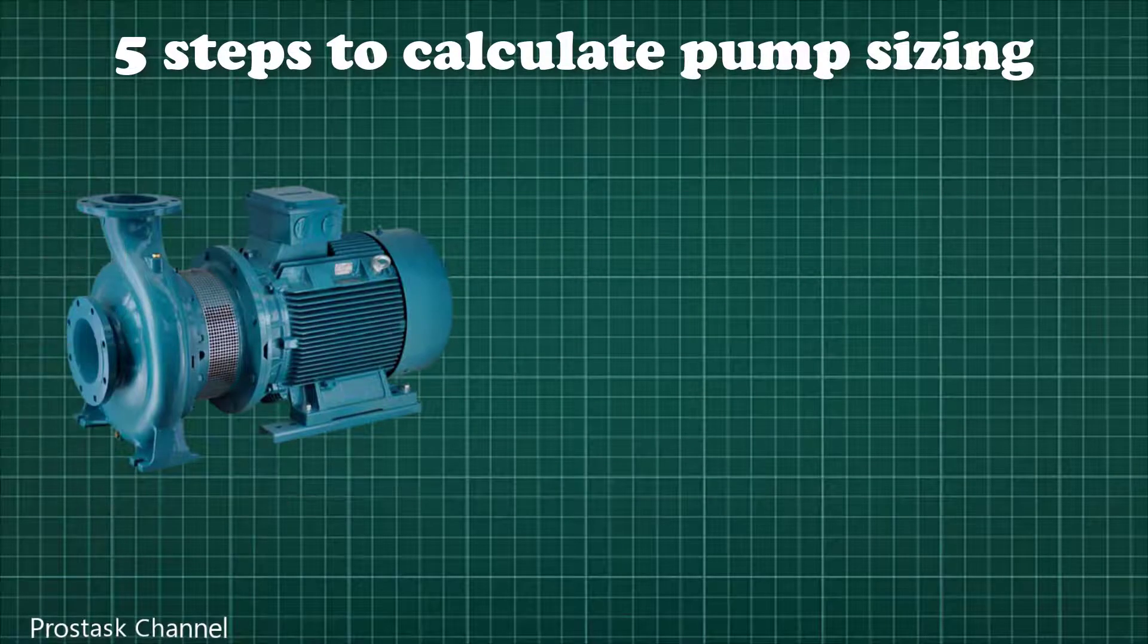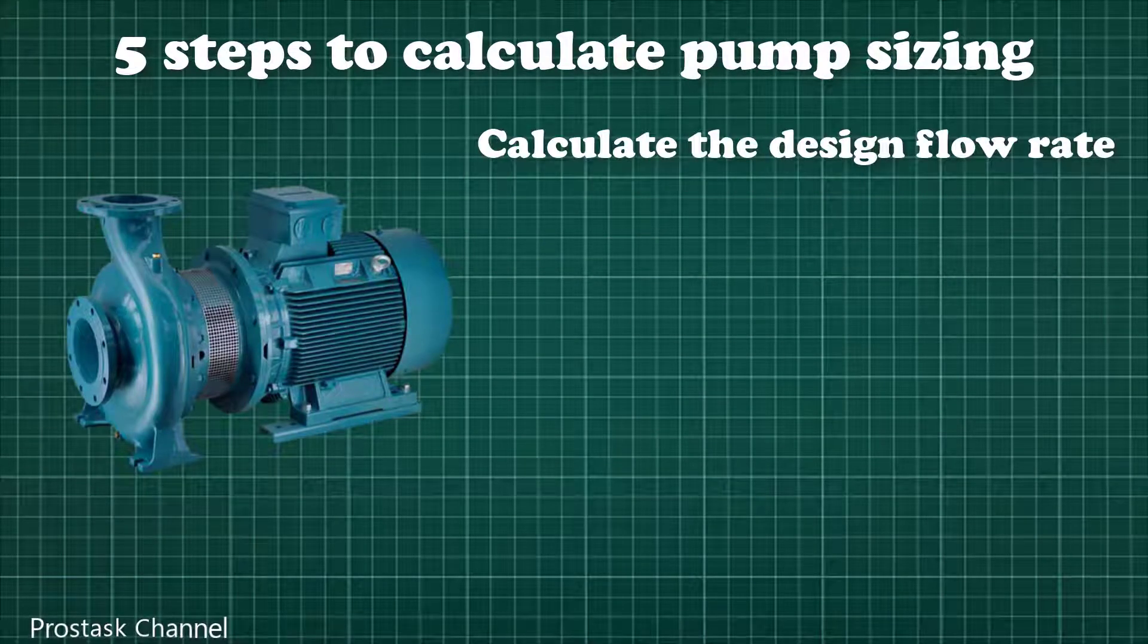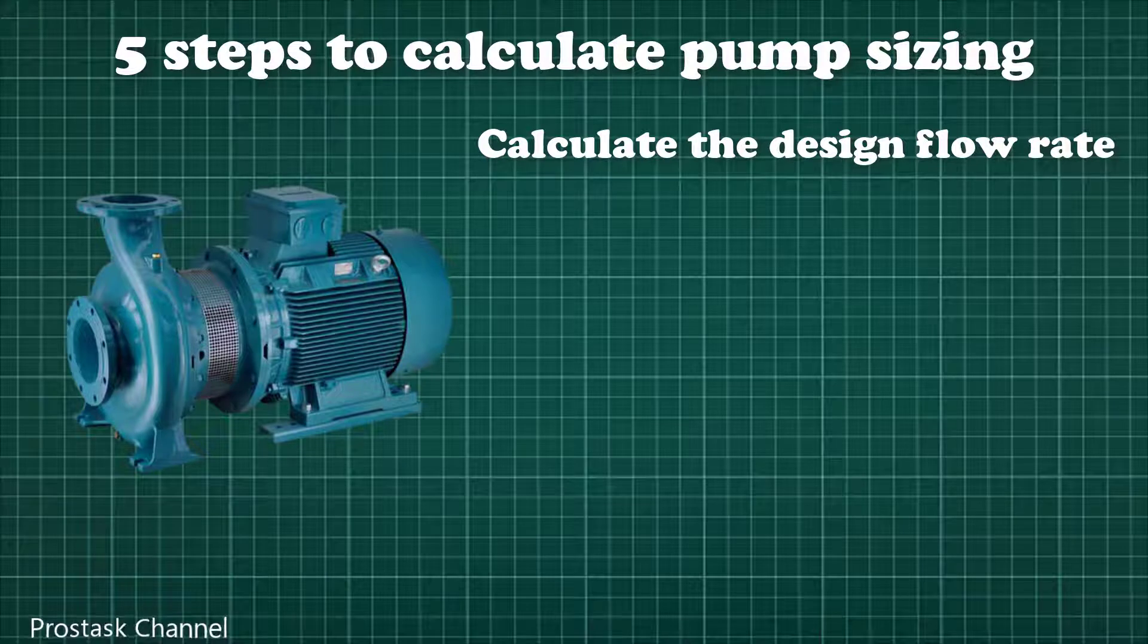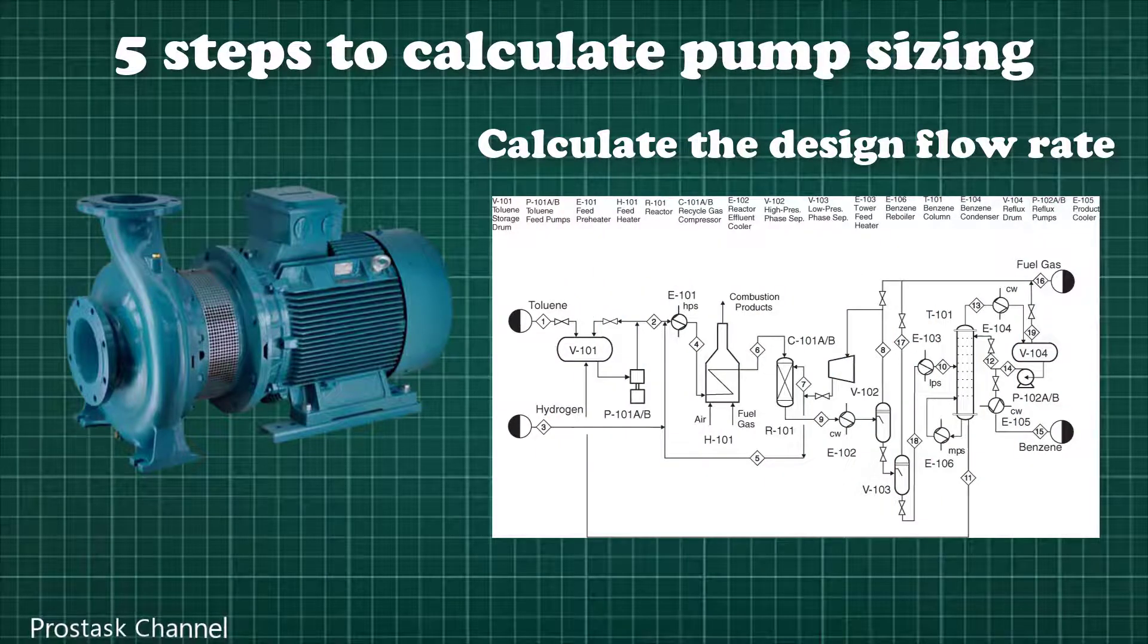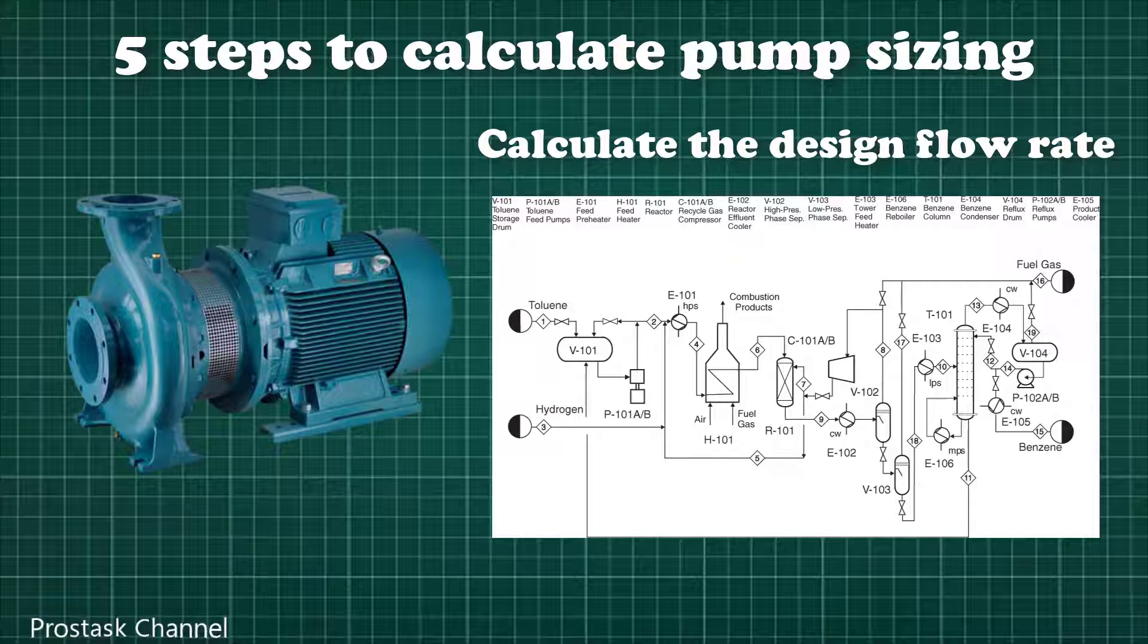First step is to calculate the pump flow rate or capacity that is required to deliver from one point to the other point. This data, typically, can be found from process flow diagram or heat and material balance with the provision of safety margin 25 to 30% of required flow rate.